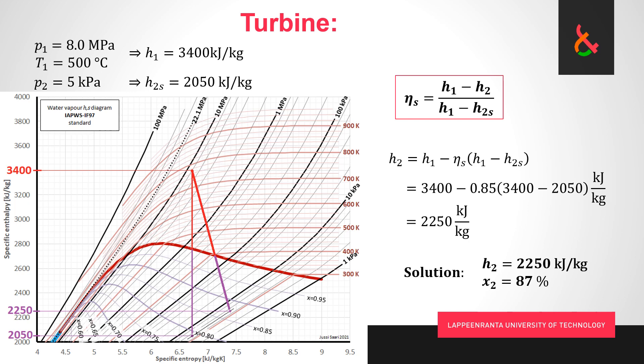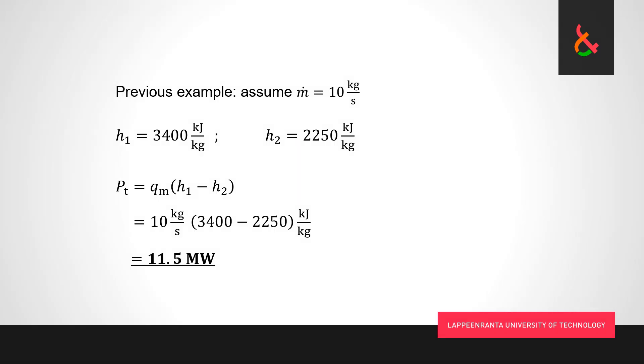Then the last point, we wanted to calculate the turbine thermal power, now that we have the enthalpy change over the turbine. We have to assume some kind of mass flow rate. Let's say that we have a very small turbine, only 10 kilograms per second. Thermal power equals mass flow rate times enthalpy change. Plug in the numbers, and we get 11.5 megawatts. Thermal power and turbine calculation is as simple as that.